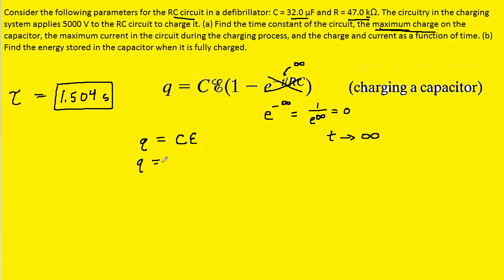So, we need to simply take the capacitance, which we already noted was 32 times 10 to the minus 6 farads, and multiply it by the potential difference that is supplied by the circuitry. And we were told that that is equal to 5000 volts, so we can plug that in as well. And when we compute this, we're going to get 0.16, and the standard unit of charge is coulombs. So, this would represent the maximum charge that will be present on this capacitor.